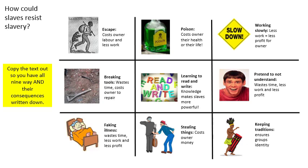Sixth is pretending not to understand — playing dumb. It wasted time having something explained to them repeatedly, and the overseers and plantation owners assumed they were dumb anyway, so slaves sometimes played on that. Making overseers explain tasks more than once was a time-wasting technique, whereas the slave knew exactly what to do — meaning less work was produced and less profit made.